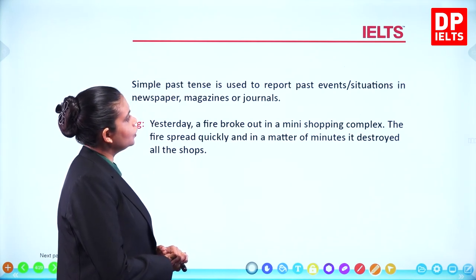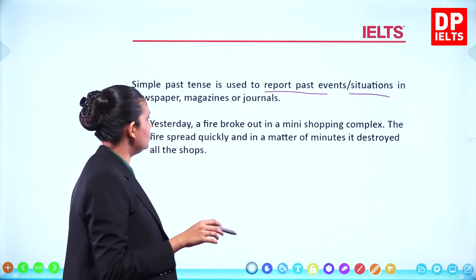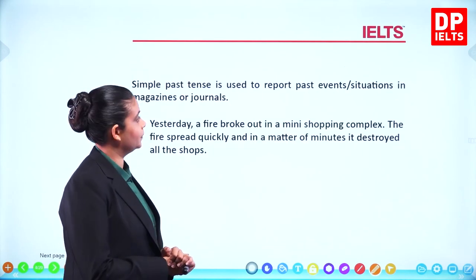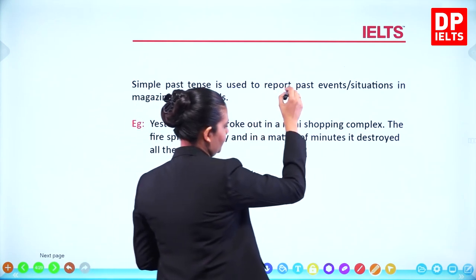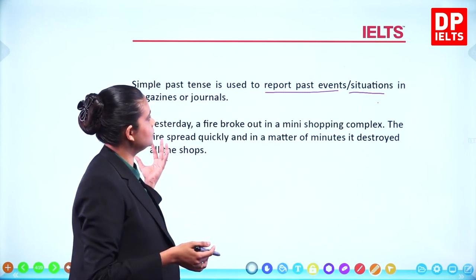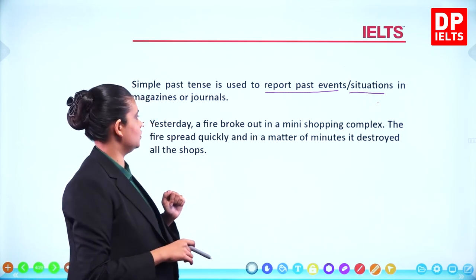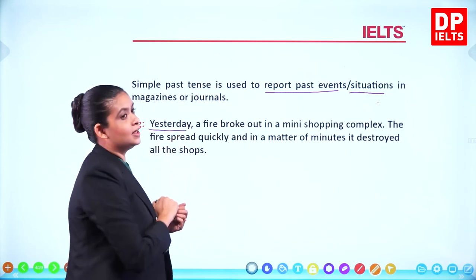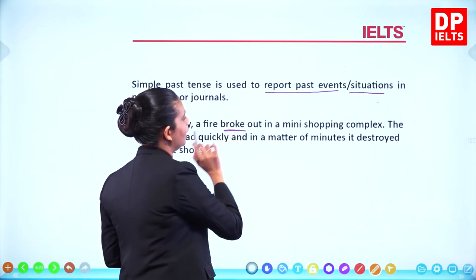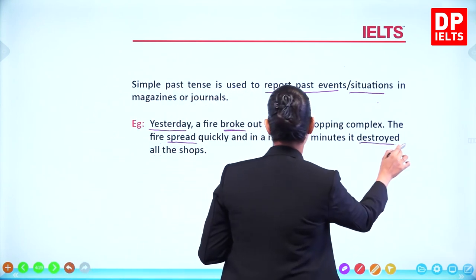The simple past tense is used to report past events or situations, especially in newspapers, magazines, or journals. You always have a time indication — yesterday, two days ago, long time ago. Example: 'Yesterday a fire broke out in a mini shopping complex. The fire spread quickly and in a matter of minutes it destroyed all the shops.'